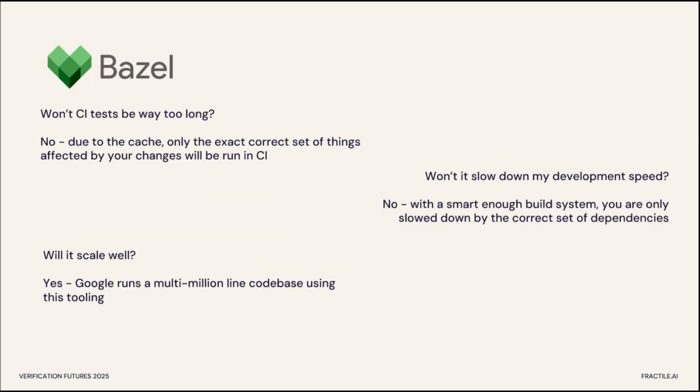To answer the questions: won't CI tests be way too long? No. Because you've got this cached set of tests and only rerun tests that are cache-invalidated by a change, only the correct set of tests gets run for a given CI. Won't it slow down my development speed? It may slow down your speed, but it won't slow down your velocity — it actually increases velocity. Speed is how many commits you can do in a day; velocity is the actual number of commits which are useful to everybody, building towards a product that works together. Will it scale well? Yes. Google runs a multi-billion line codebase using this exact set of tooling. There are also tools to make Git go much faster than vanilla Git.